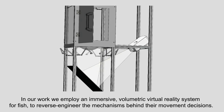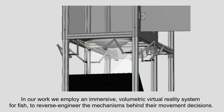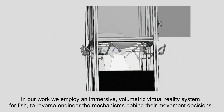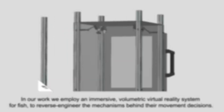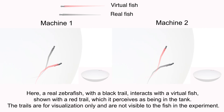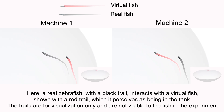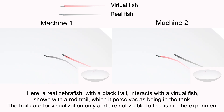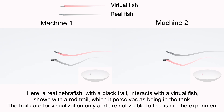In our work, we employ an immersive, volumetric virtual reality system for fish to reverse engineer the mechanisms behind their movement decisions. Here, a real zebrafish, with a black trail, interacts with a virtual fish, shown with a red trail, which it perceives as being in the tank. The trails are for visualization only, and are not visible to the fish in the experiment.